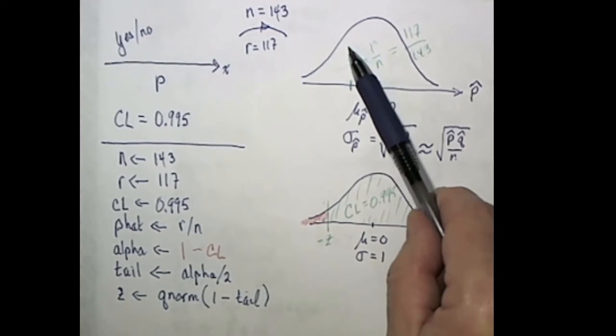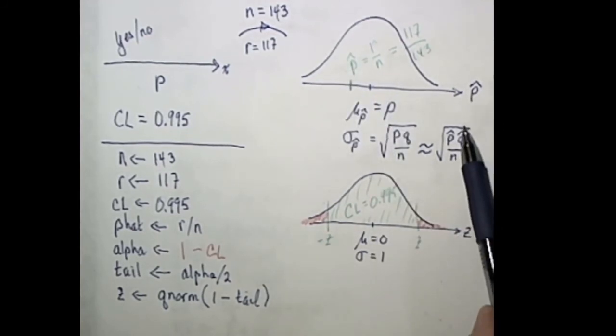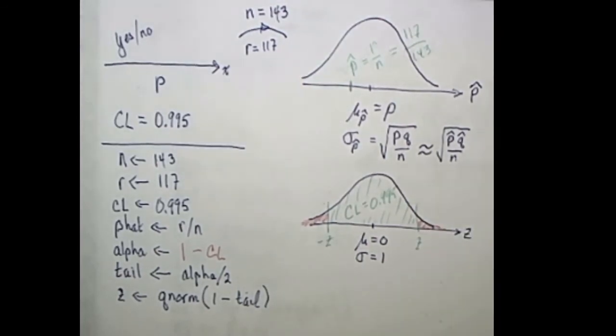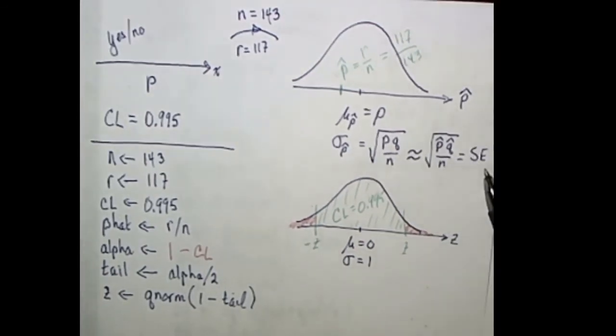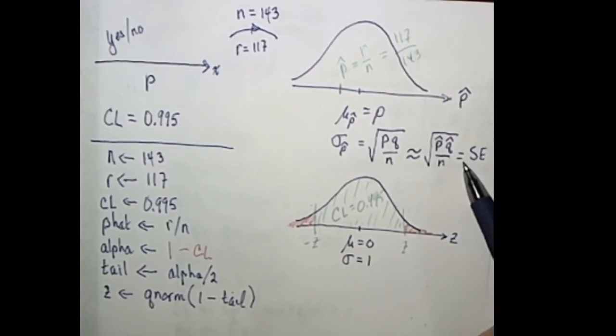We can find p hat, so therefore we can find q hat, and this will be our best approximation, and we will call that the standard error, or se. So let's build that into our script.